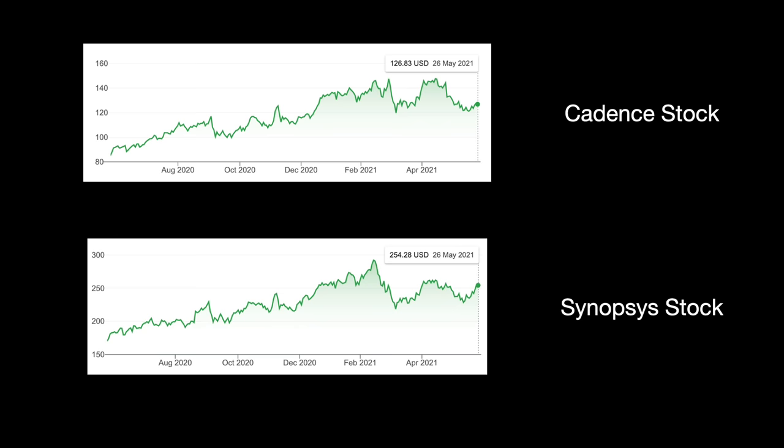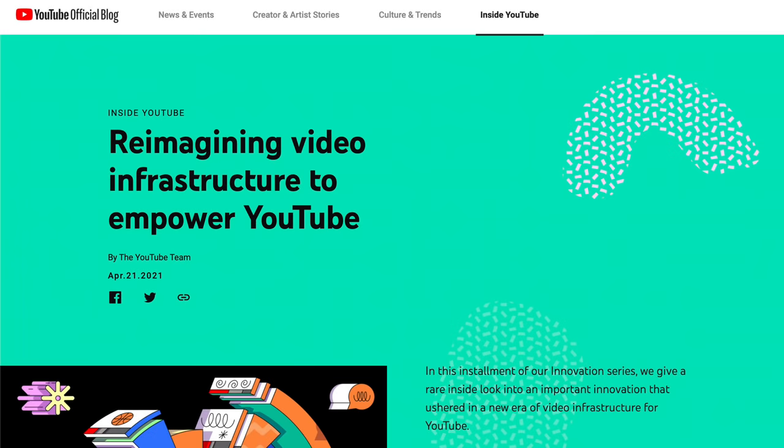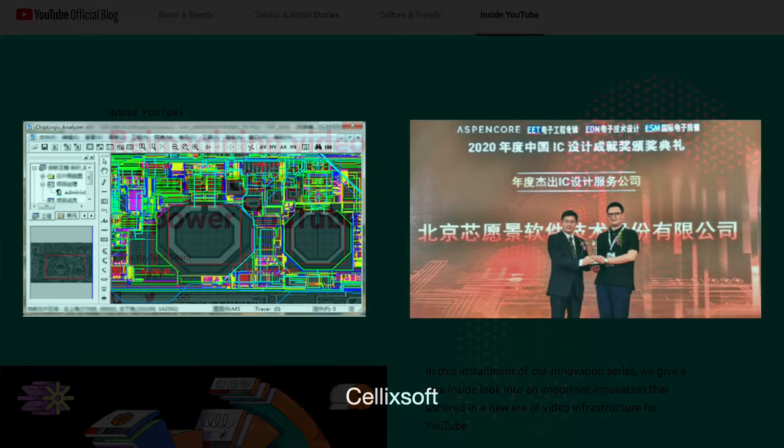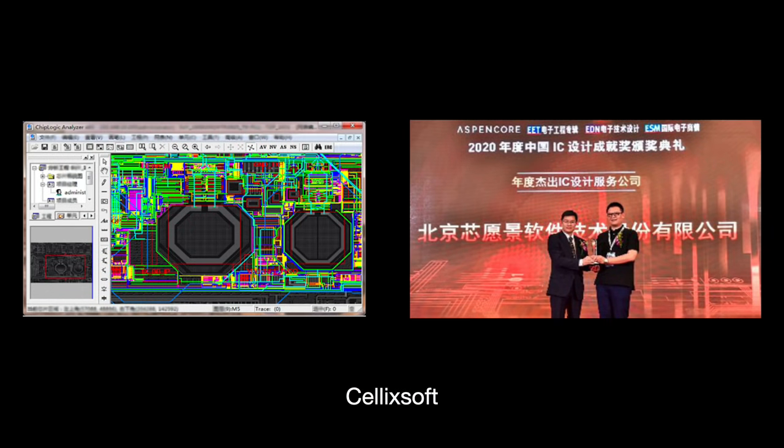There are a few companies out there challenging the two major incumbents. Google apparently made their own EDA tool to design a recent YouTube chip. That's really interesting. There are a few Chinese alternatives like Empyrean and Celexoft that recently have gotten increased attention due to the US-China trade war. And not to mention open source EDA tools for things like RISC-V. Such efforts as of now remain undeveloped and lag the market leaders.